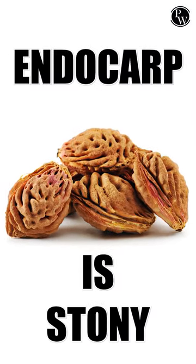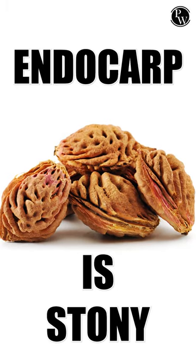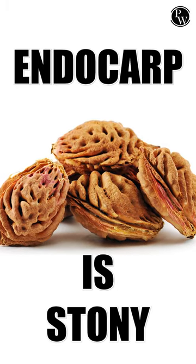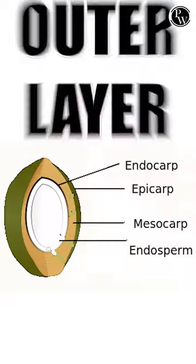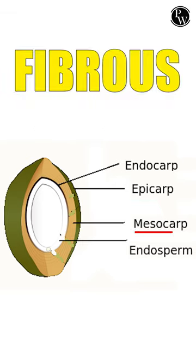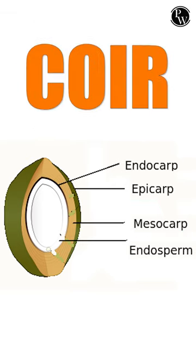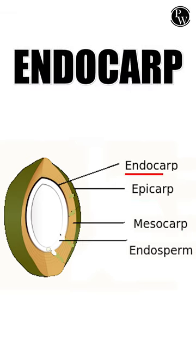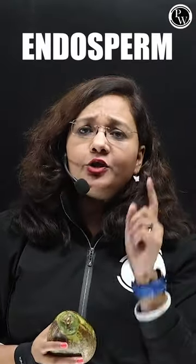Here, endocarp is stony and it is very hard in nature. In case of coconut, this outer layer is epicarp, mesocarp is fibrous and is also known as coir, endocarp is stony, and what we eat and drink is the endosperm of this fruit.